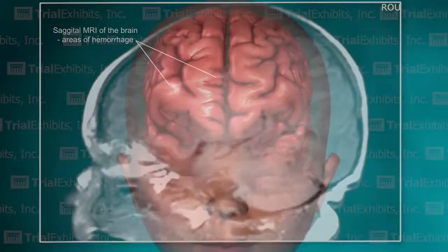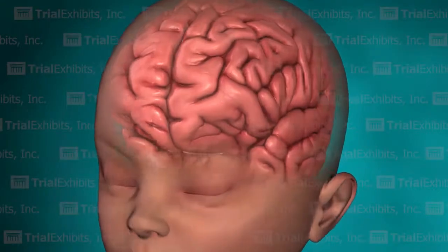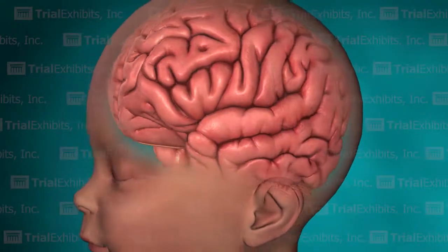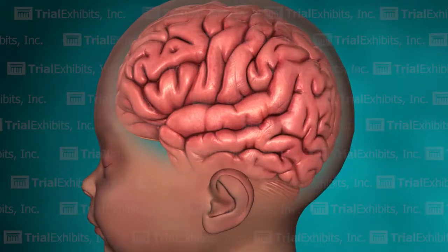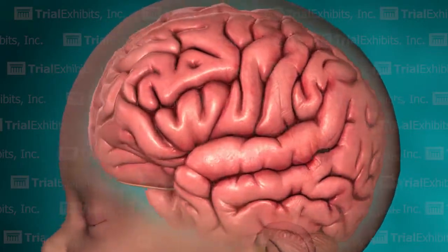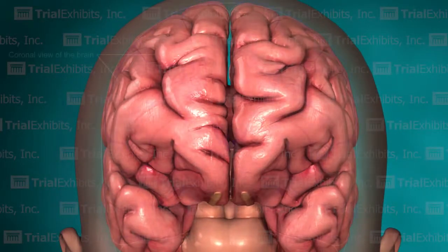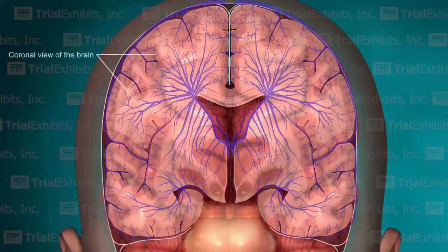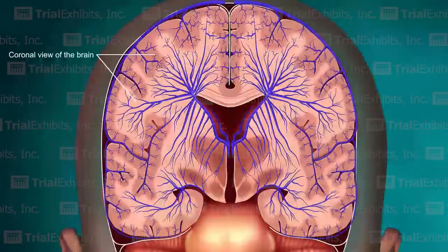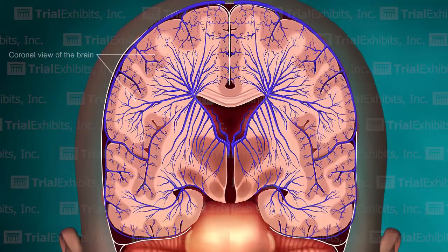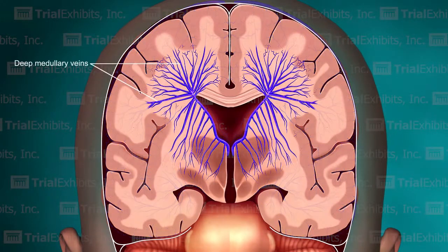Trial Exhibits found a solution to make the truth understandable. The solution was to create a 3D view of the head and brain of this newborn infant, and to remove portions of the brain to allow for a clear view of the complex venous network within.